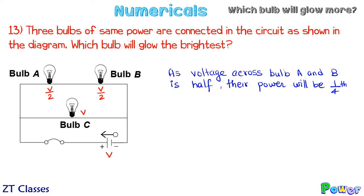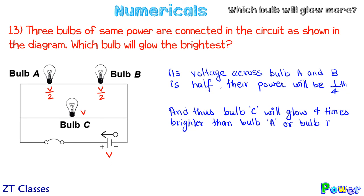If the battery voltage is V, then the two bulbs in series each have a potential drop of V/2, while bulb C connected in parallel has the full voltage V across it. Since power is proportional to V squared, the voltage being half means power becomes one-fourth for the series bulbs. So bulb A and bulb B will glow at one-fourth the glow of bulb C — bulb C is going to glow the brightest. In the next lecture we'll find the effective power when bulbs are connected in series or parallel. I hope today's concept is crystal clear — see you in the next video, bye bye.